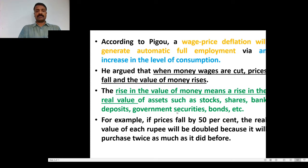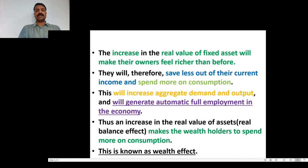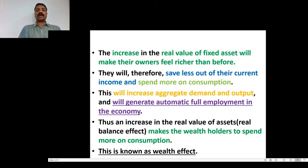The rise in the value of money means the real value of assets is increased. The consumption expenditure is increased and people save less out of their current income and spend more on consumption, which leads to an increase in aggregate demand and output. In order to meet the increased demand in the market, producers try to increase their output level, which leads to an increase in the demand for labor and gives more employment opportunity. This will generate automatic full employment in the economy.